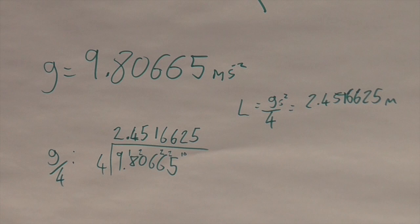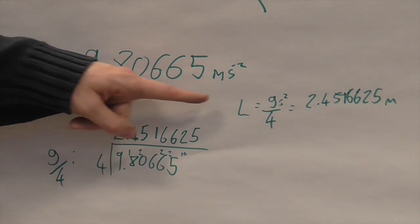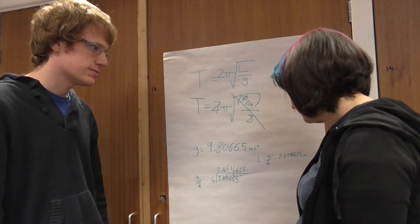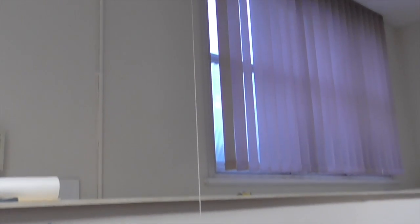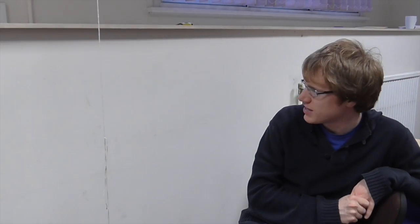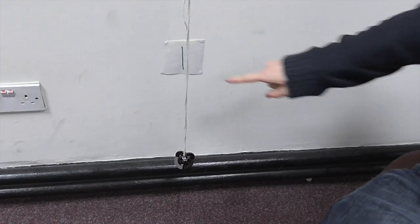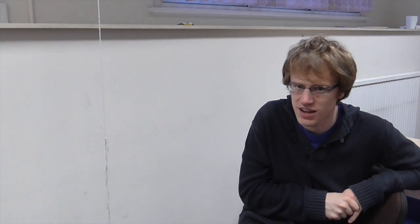So have you done any calculations? Yeah, we've got our value for g, the acceleration due to gravity, that's 9.80665 meters per second per second. We've done some good old-fashioned division by 4 to get the length in meters that we want for our string, which is just a little bit over 2.45 meters. So we've made a pendulum that as near as we can get it is 2.4516625 meters long, so hopefully when we set this going, it will take exactly pi seconds to complete one swing. We'll put a little line on the wall so that we can stop the watch just as the string goes past that line.